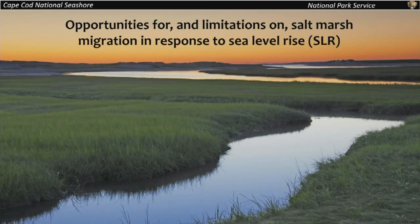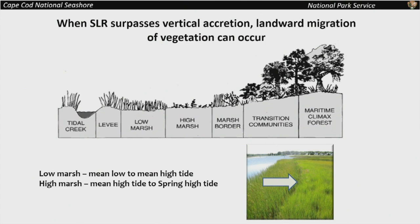One of the things that salt marshes can do in response to sea level rise, other than being squeezed out of existence, is to migrate upslope. That depends on a number of things, however. When sea level rise surpasses vertical accretion — the production of root material and the buildup of marshes — landward migration can occur. We see a transition in the pictures of the high marsh disappearing, with everything transgressing in a landward direction.